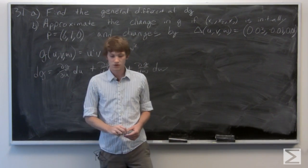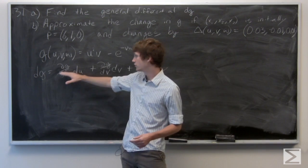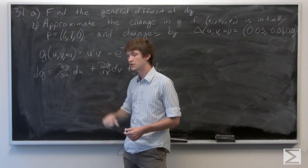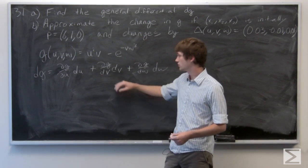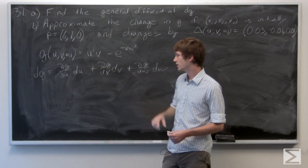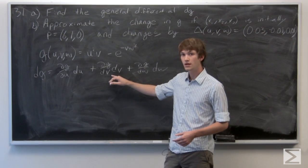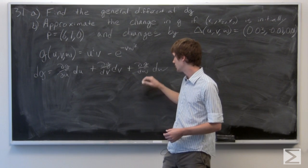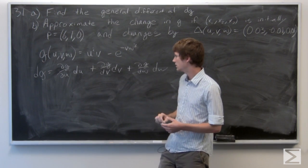is equal to the partial derivative of g with respect to u times du, plus the partial derivative of g with respect to v times dv, plus the partial derivative of g with respect to w times dw.